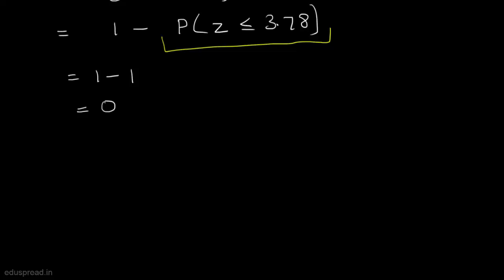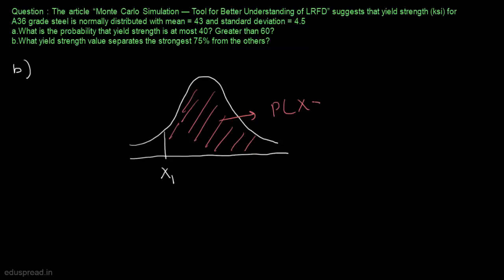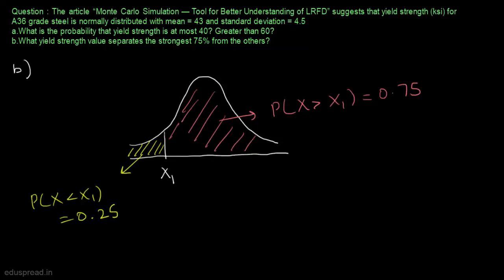So the probability that yield strength is greater than 60 is close to 0. That completes part A. In part B, we have to find that value of yield strength that separates the strongest 75% from the others. Let's call this value x1, where the probability that x lies to the right of x1 is 0.75, and the probability that x lies to the left is 0.25. So we need to find x1 such that P(x ≤ x1) = 0.25.